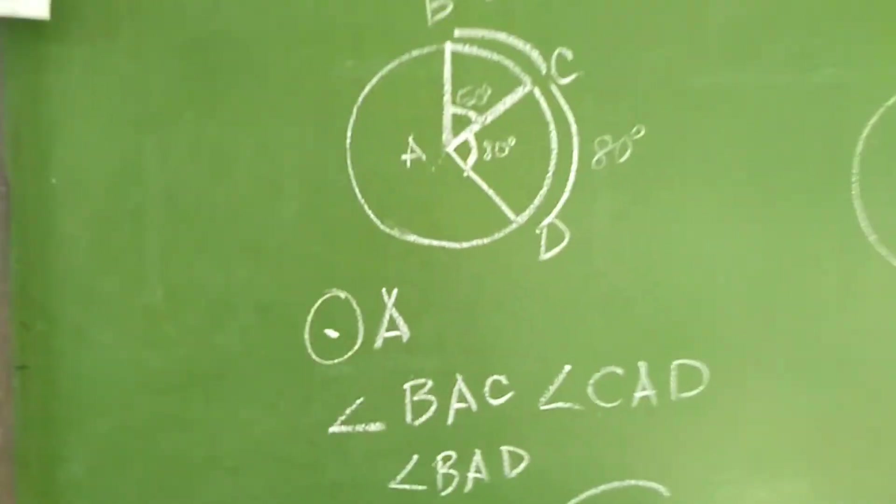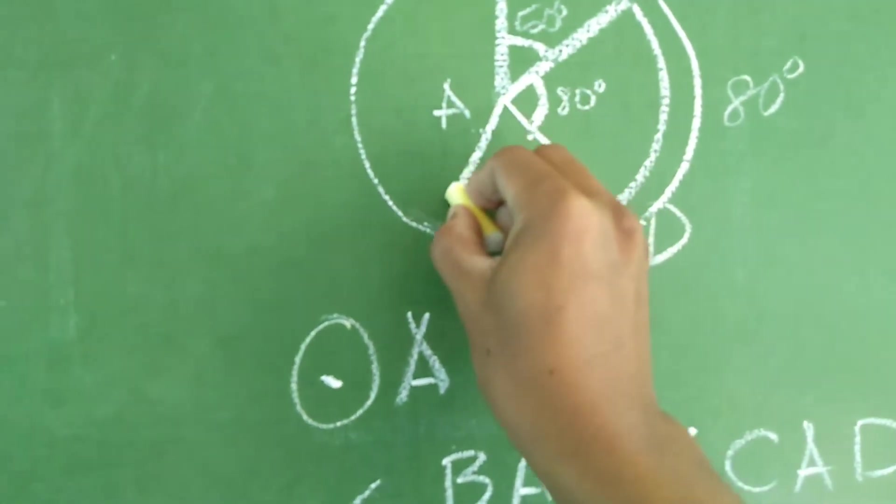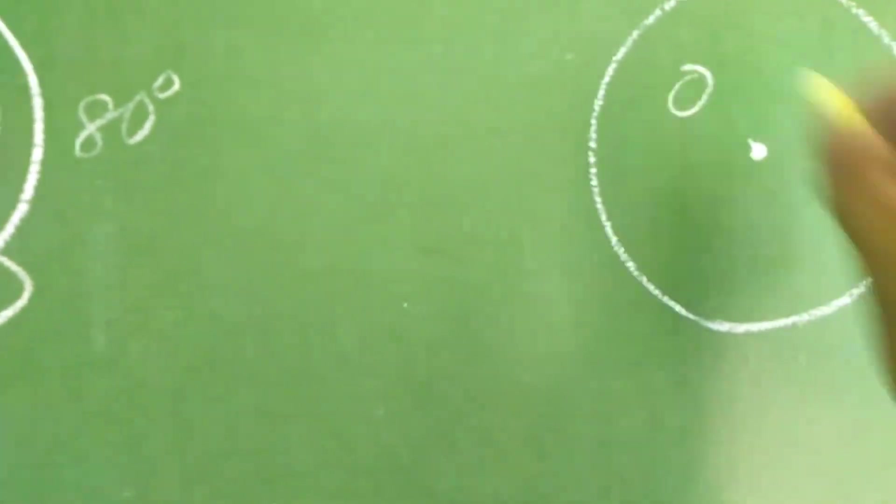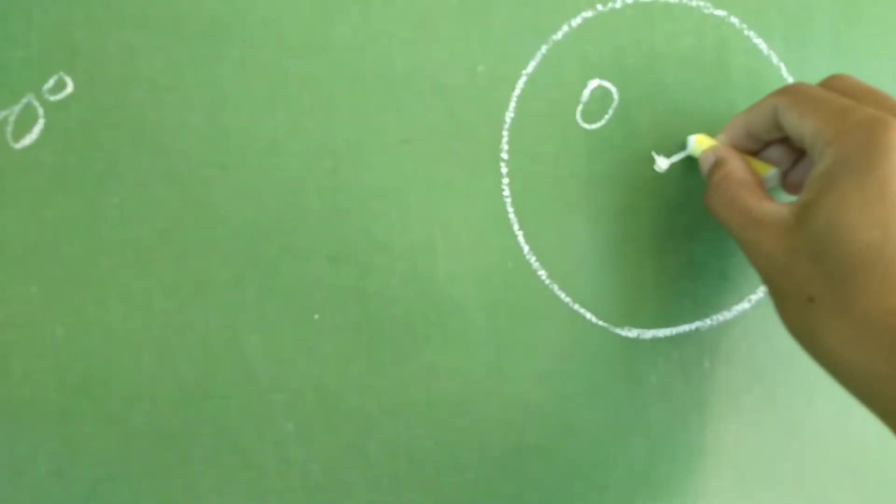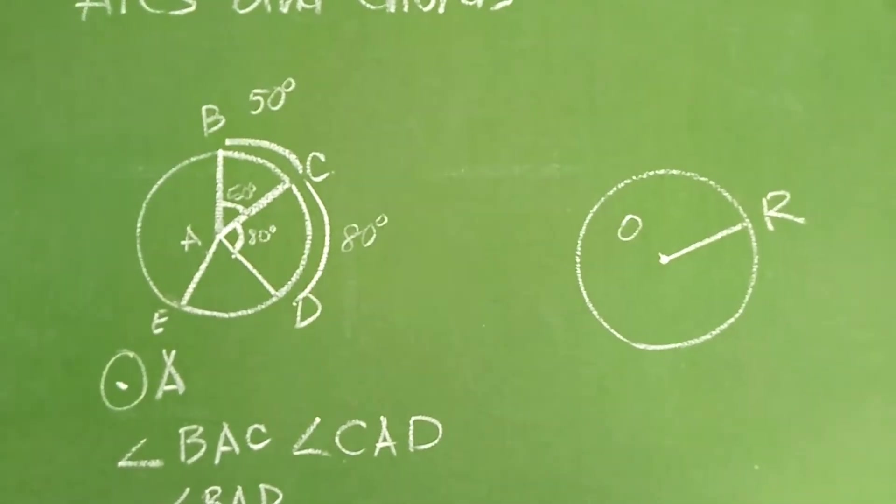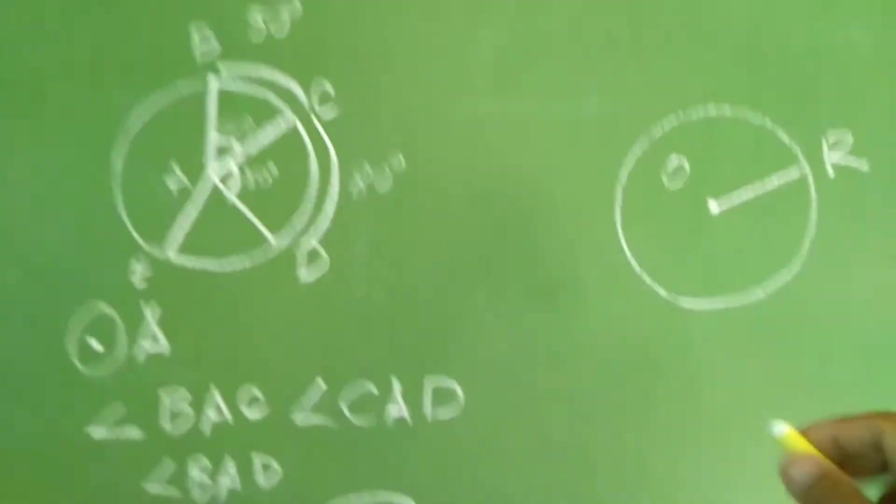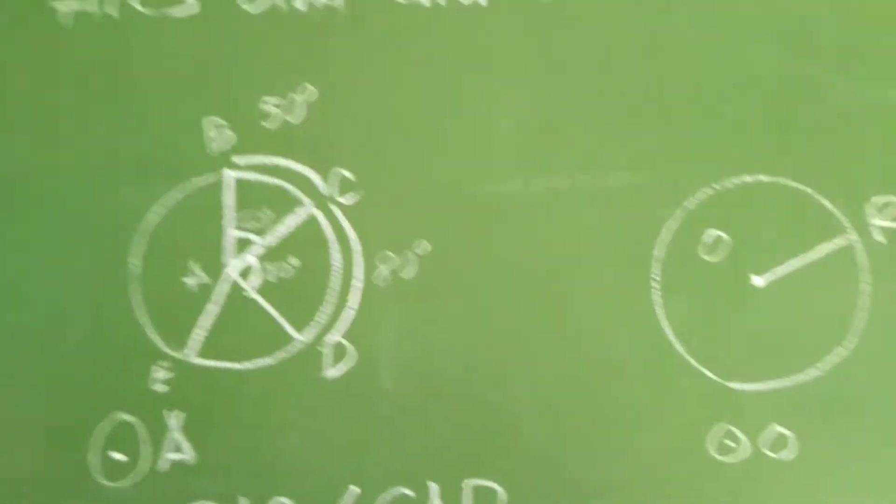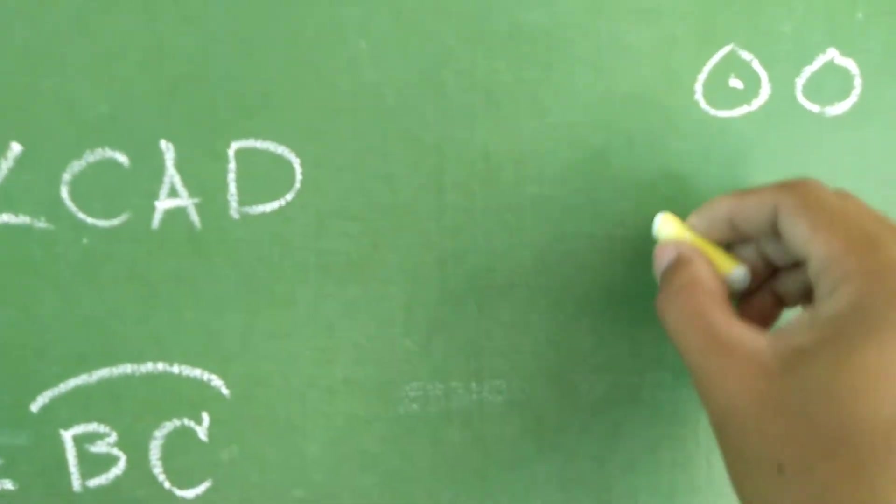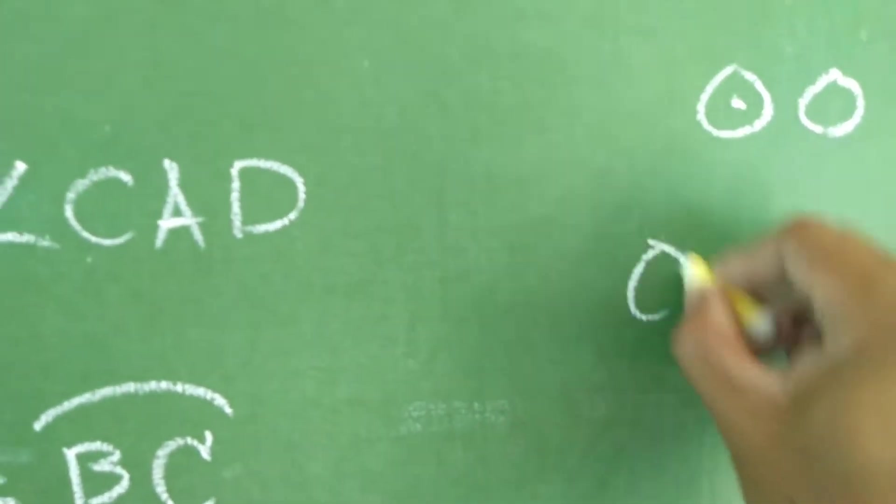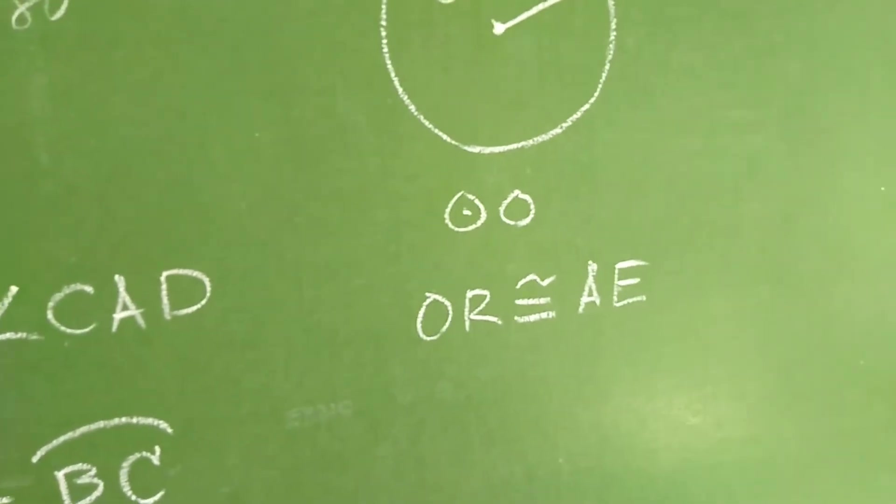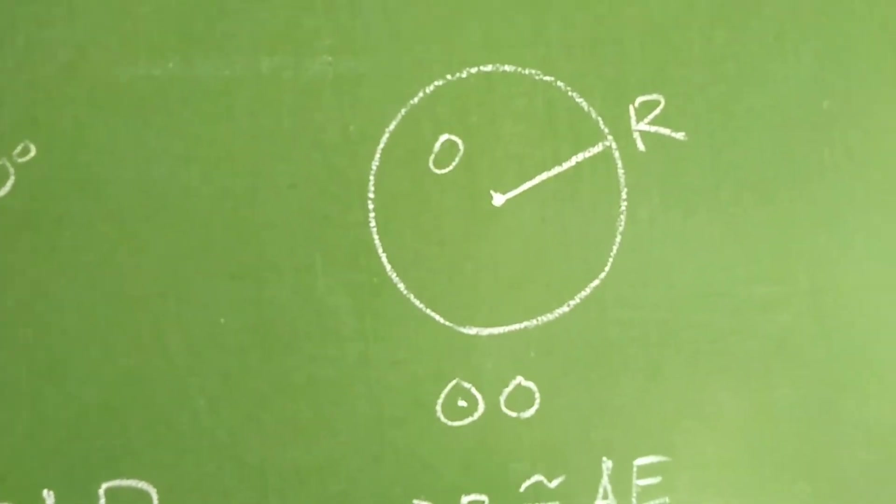Sunod naman po tayo dito, no? Maglalagay ako dito ng another radius. Sabihin natin this is E. This is circle O, at meron siyang radius na O, R. Okay, tignan ninyo ang dalawang circle na yan. Circle A, at saka circle O. Okay, circle A, and circle O. Ang sinabi po ni teacher, or ang sinabi po ng mathematics book natin is, OR is congruent to AE.